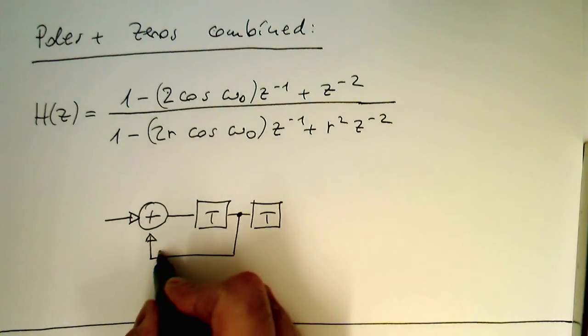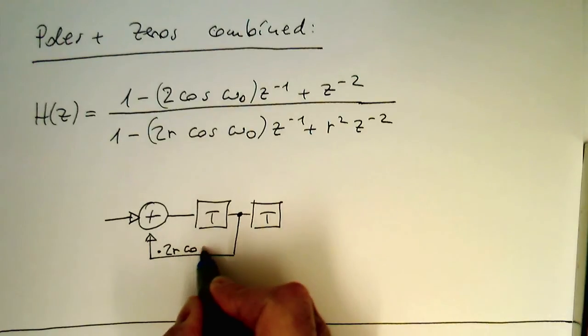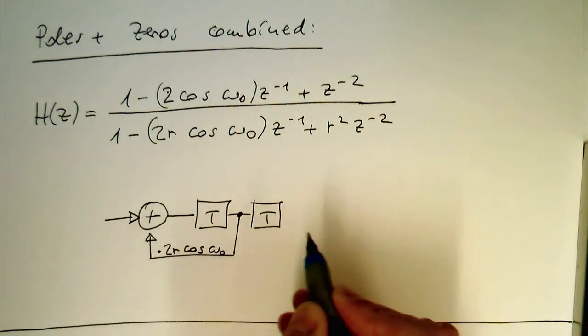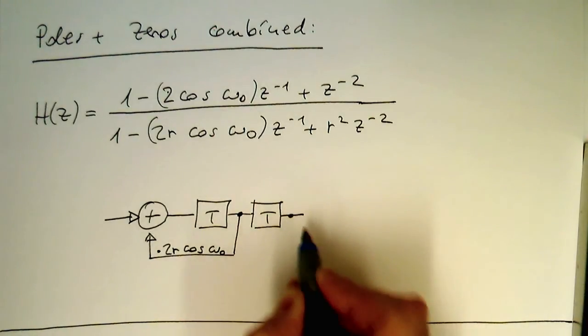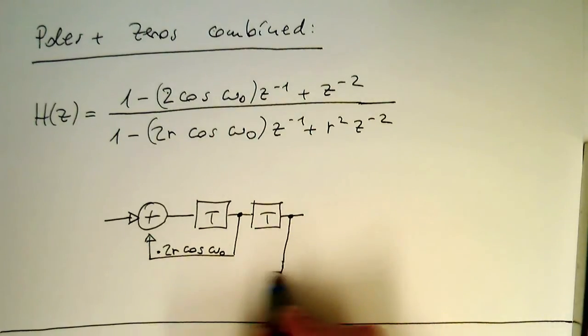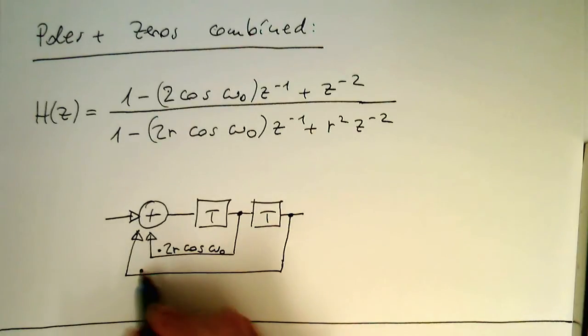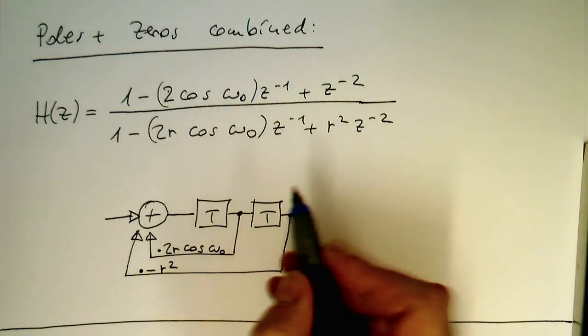So we know that. And then the one delay step here feeds back to the input here. And we know that this negative sign in this case goes away. So this gives us two cosine omega zero in the multiplication of this pathway here. Then the delayed version here by two time steps. This subtracts r square. So in this case we are multiplying this here with minus r square.